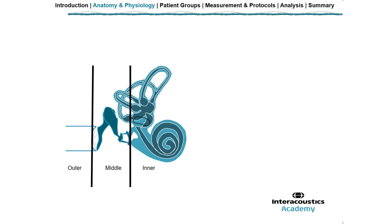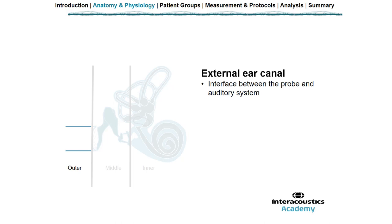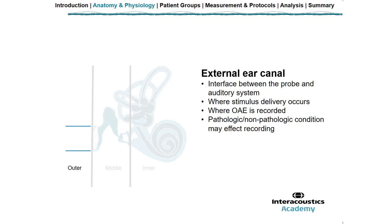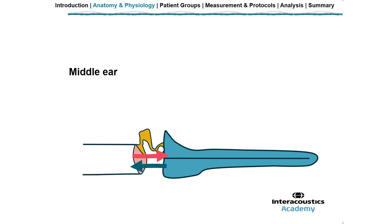Now let's look at the role the outer, middle, and inner ear play in recording an OAE. The outer ear or external canal is where the interface is between the probe and the auditory system, where stimulus delivery occurs, and where we're recording the OAE. Any pathologic or non-pathologic condition will affect our recording, so we need to consider things such as wax or debris, the shape of the ear canal, and ensuring a good probe fit. If the probe is not fitted properly, there can be leakage of the OAE and environmental noise can enter the recording.